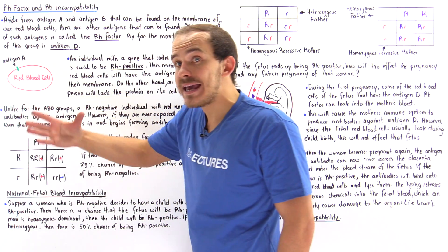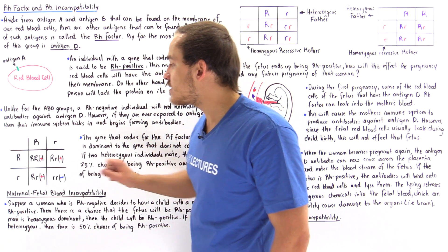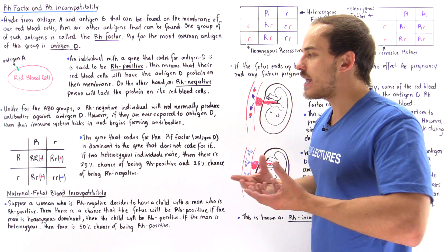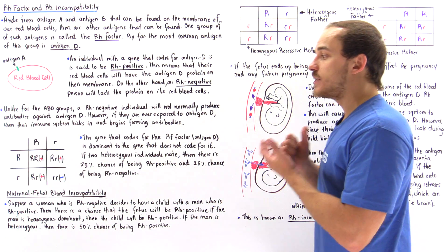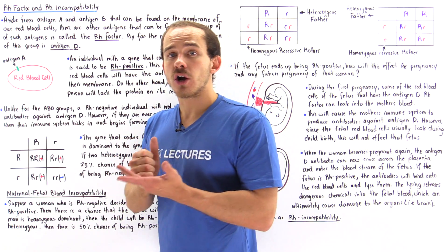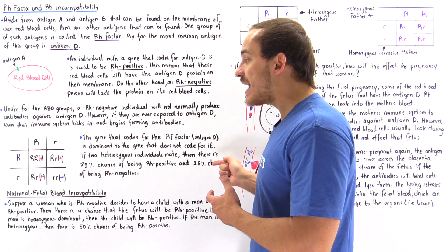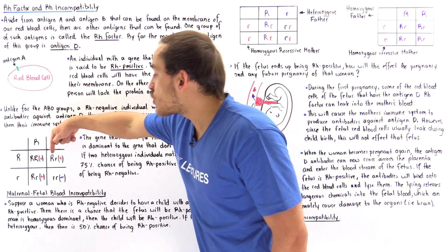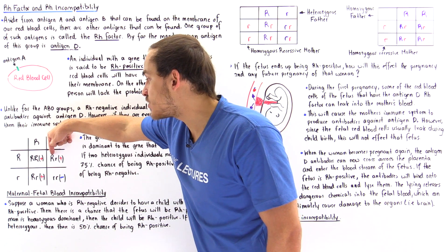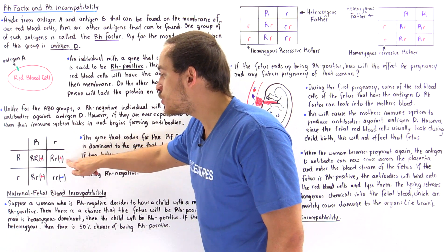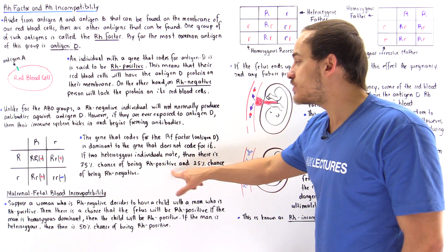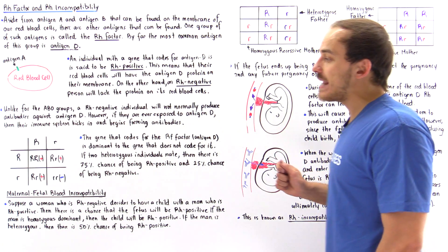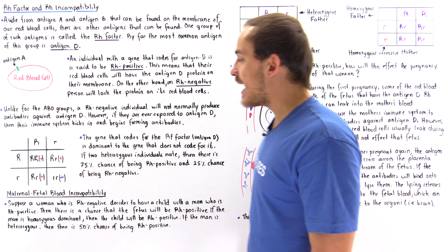Let's suppose the father mates with a mother that is also heterozygous for that same trait — uppercase R, lowercase R. Because the gene is dominant to the recessive trait, uppercase R and uppercase R will be Rh positive, and so will uppercase R and lowercase R, because uppercase R is dominant over lowercase R. So 3 out of 4 will be Rh positive — 75% will be Rh positive, and there's a 25% chance it will be Rh negative. We get Rh negative only if we have lowercase R, lowercase R.